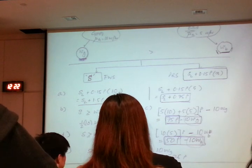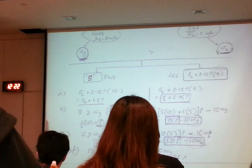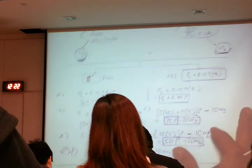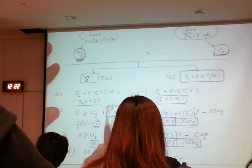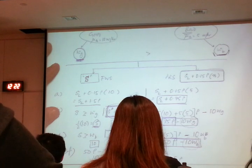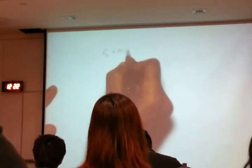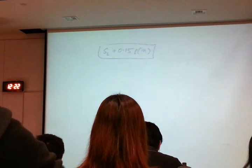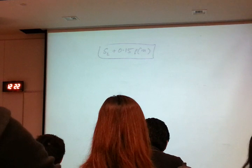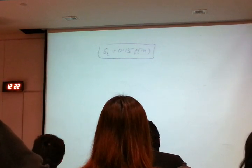Now we look at the piece rate scheme: SL plus 0.15P times N (the number of widgets produced). Part F asks: for which values of SL will good quality workers apply to work for this firm? Even though the scheme looks variable, from the perspective of good quality workers it is a constant — they know they produce 10 widgets per hour, so their payment is SL plus 1.5P.